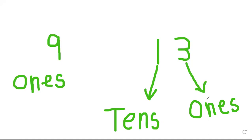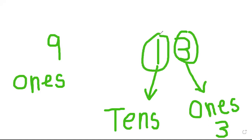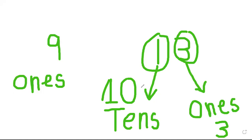So how many ones do we have here? We have three ones. And how many tens? We have only one ten. When we write tens, you must write zero with it. So three ones and one ten make 13, because 10 plus 3 is 13.